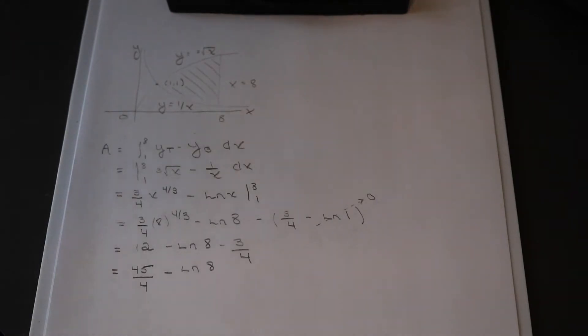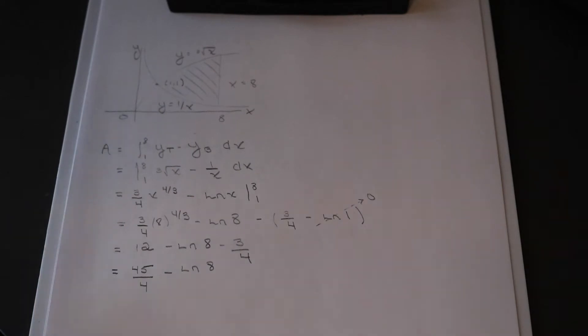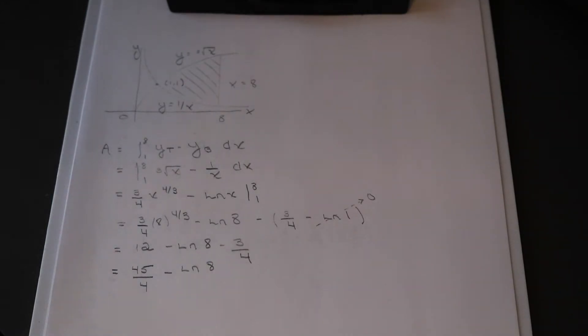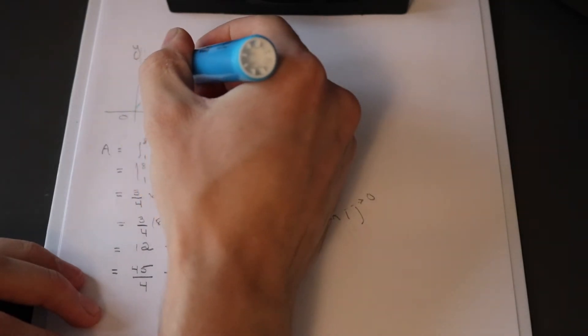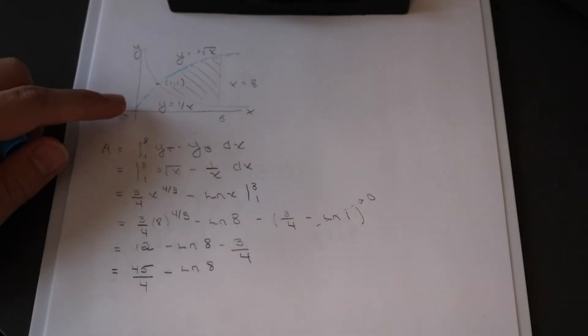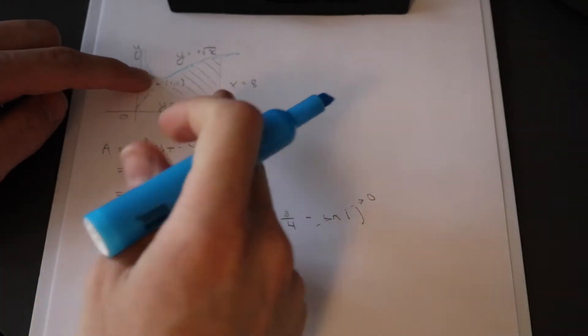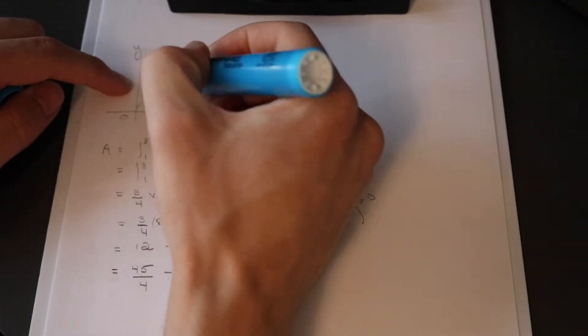Let's deal with the most common case you'd probably see in calculus. The first scenario is when you're dealing with your functions in terms of y and x bounds. When we're dealing with two curves and trying to find the area between them, I'm going to make blue the top curve. When we integrate, we're taking everything between those bounds and calculating the area down to the x-axis.